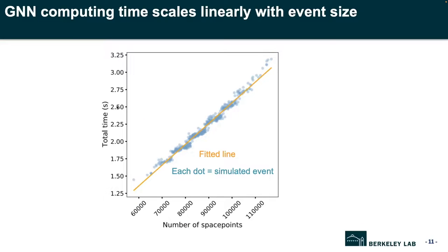With this GNN-based tracking pipeline, we apply it to simulated events of the ATLAS detector. What you see here is the GNN pipeline computing time versus the number of hits for each simulated event. Each dot is an event, and the orange line is fit to all of these points. As expected, the computing time scales approximately linearly with the event size.